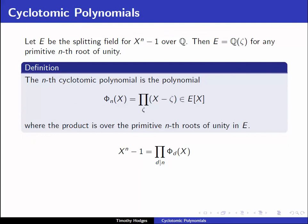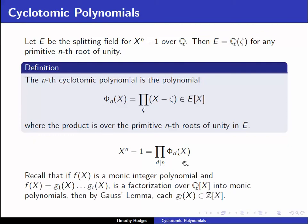What we want to show is that these phi_d of x are actually rational polynomials — in fact they have integer coefficients — and that they are irreducible as rational polynomials. One result that we'll need a lot is a consequence of Gauss's lemma: if f of x is a monic integer polynomial and if it factors as a product of monic polynomials over Q of x, then by Gauss's lemma all of these factors g_i of x are also integer polynomials.